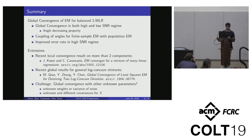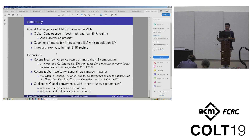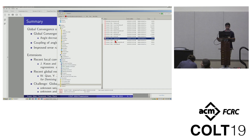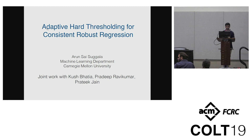In the oblivious adversary model, we assume that the corruptions added by the adversary are independent of the training data. While this might look like a restrictive adversary, it is more suitable for certain applications. For example, if the data is generated from faulty sensor readings, we expect corruptions to be independent of the training data. Moreover, we show that studying this adversary model has applications to designing estimators for heavy-tailed models as well.